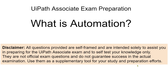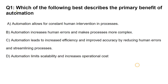Let's get started. Here is the very first question: Which of the following best describes the primary benefit of automation? Your options are: A) Automation allows for constant human intervention in processes. B) Automation increases human errors and makes processes more complex. C) Automation leads to increased efficiency and improved accuracy by reducing human errors and streamlining processes. D) Automation limits scalability and increases operational cost.